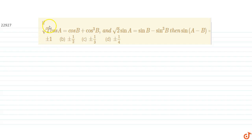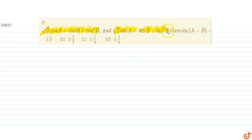In this question we are given that √2·cos a equals cos b plus cos³b, and √2·sin a equals sin b minus sin³b, and we have to find the value of sin(a − b). First of all we will start with these given equations.